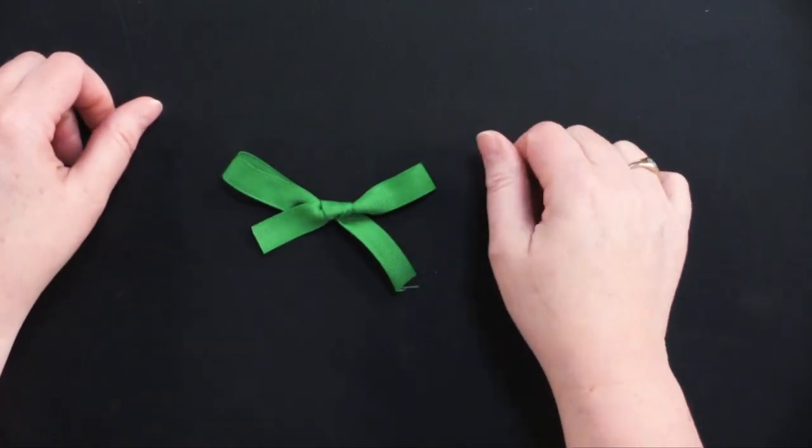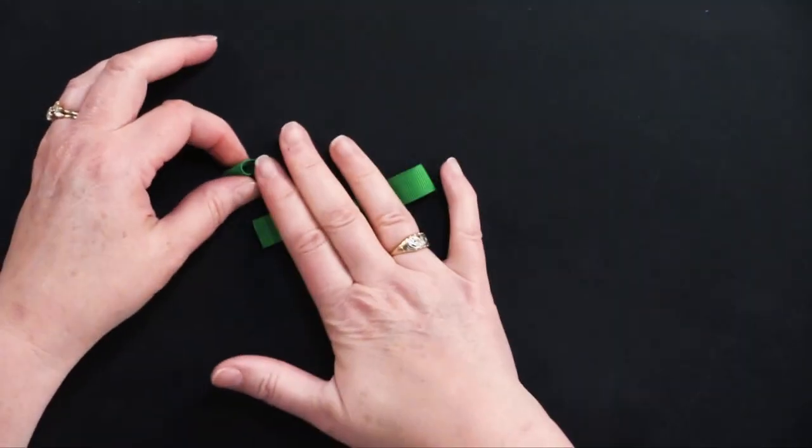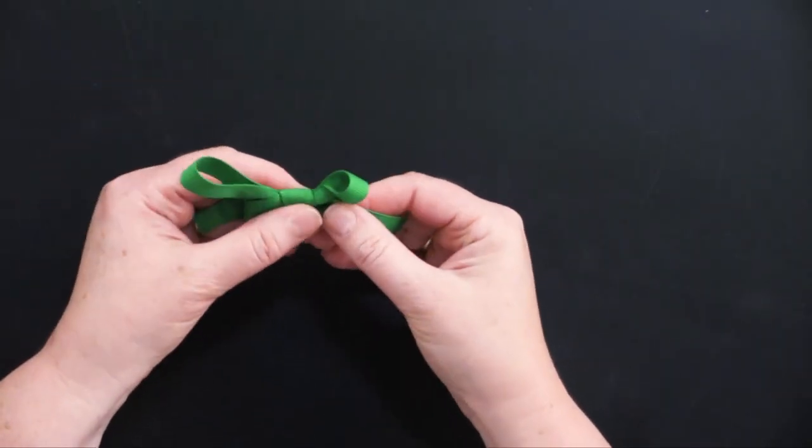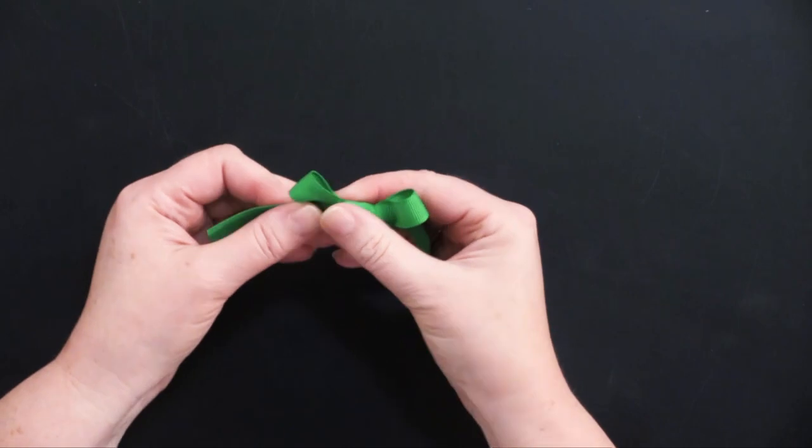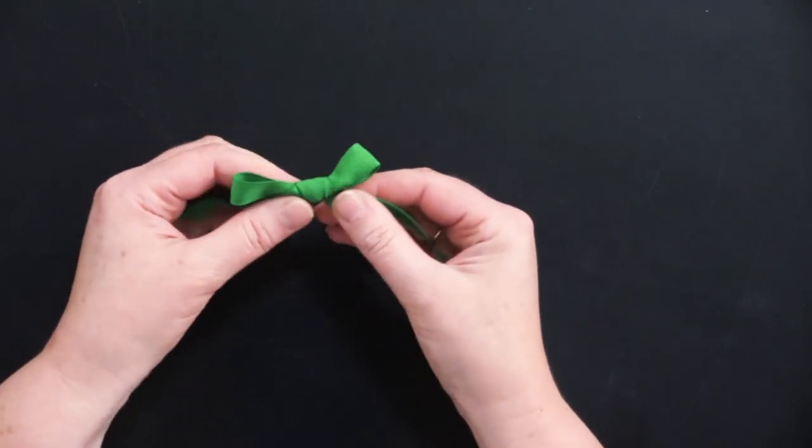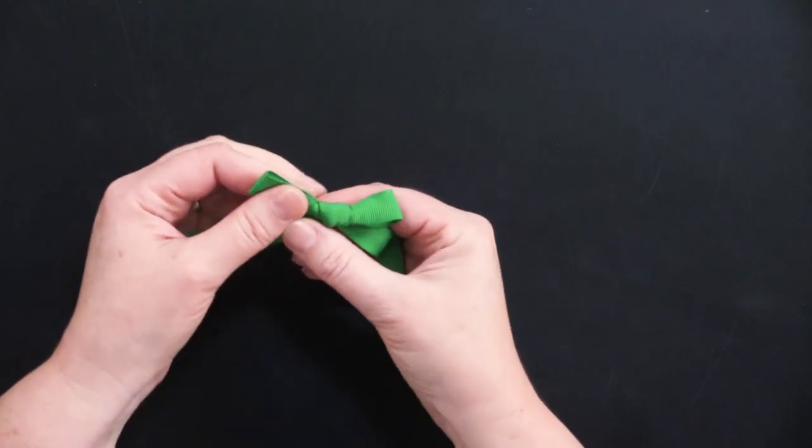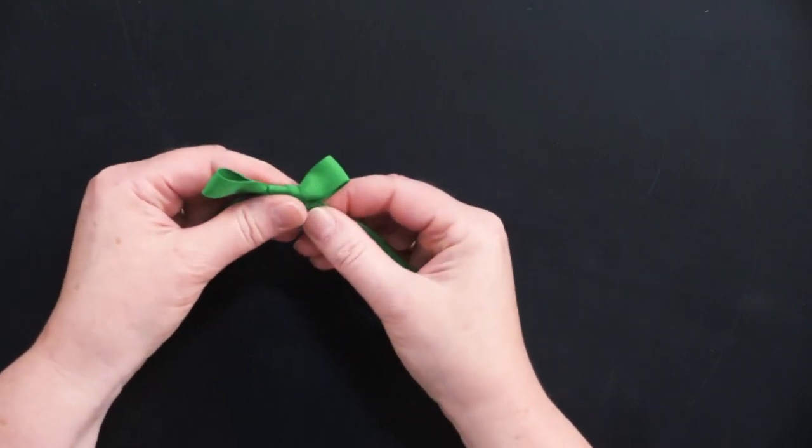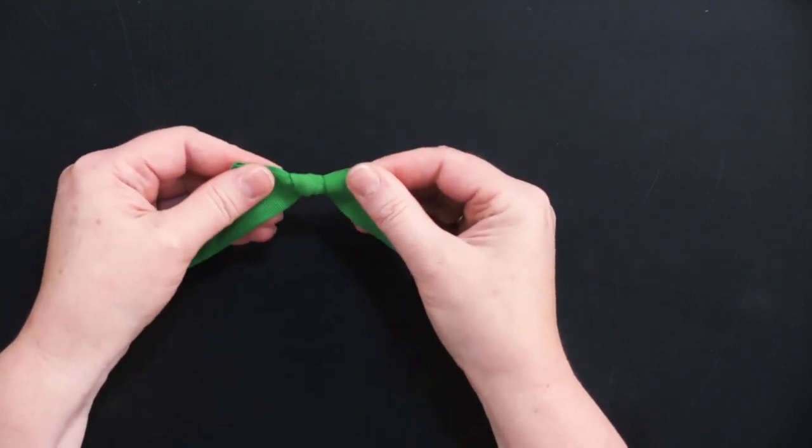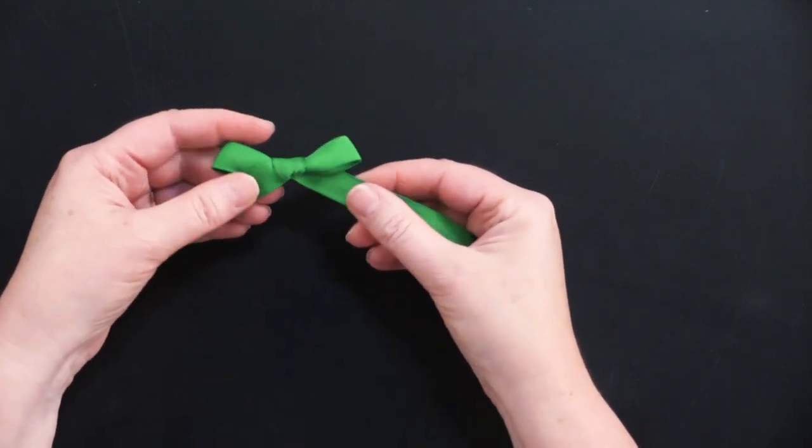Now most people stop right there and they say I can't make a bow. Well that's because you're only half done. So now we manipulate the bow. We make it smaller, we tie it tighter, keep manipulating it, we move those tails kind of down, move those bows until we get them just the right size. That's better.